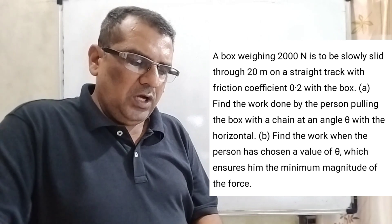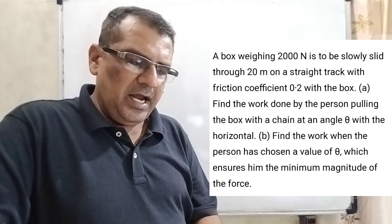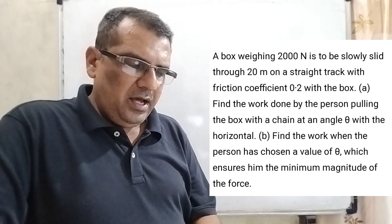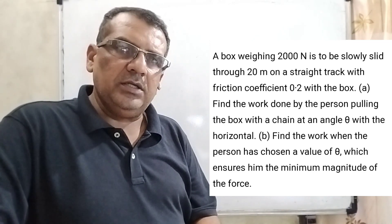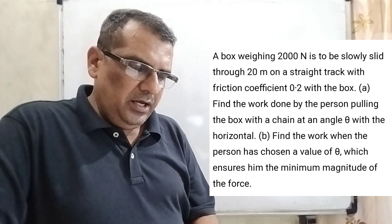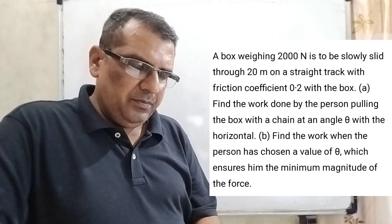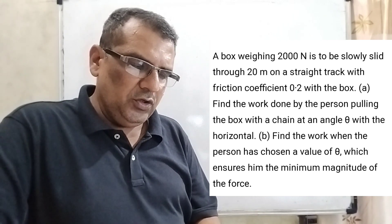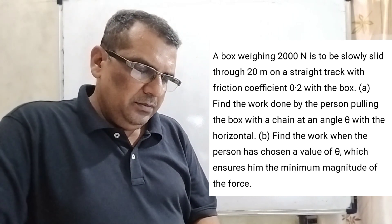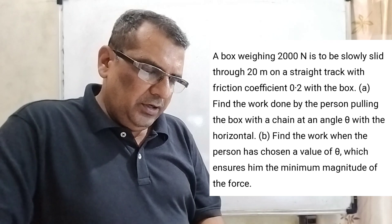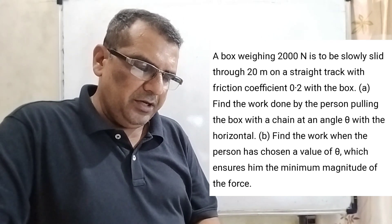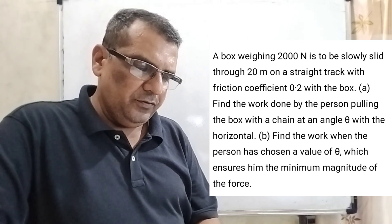A box weighing 2000 Newton is to be slowly slid through 20 meter on a straight track having friction coefficient 0.2 with the box. In sub question A, find the work done by a person pulling the box with a chain at an angle theta with the horizontal. B, find the work when the person has chosen a value of theta which ensures him the minimum magnitude of the force.